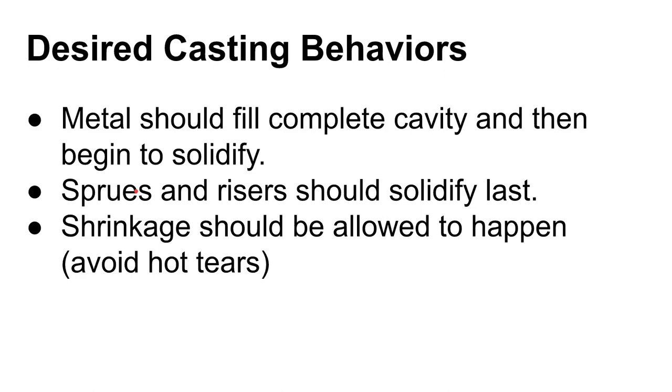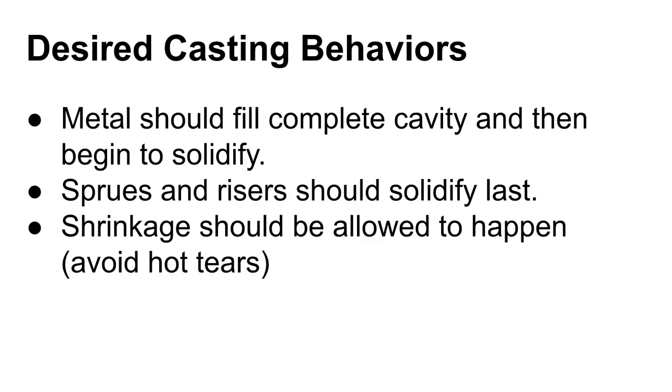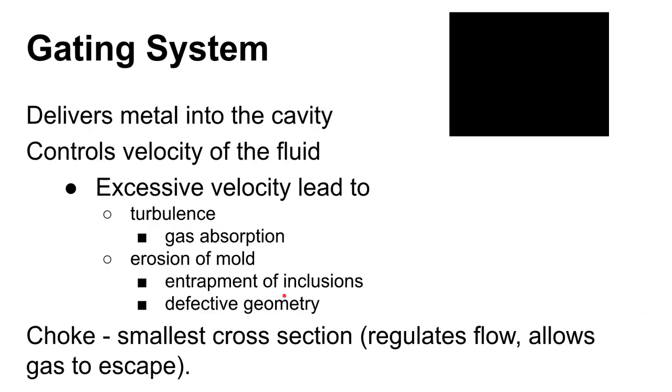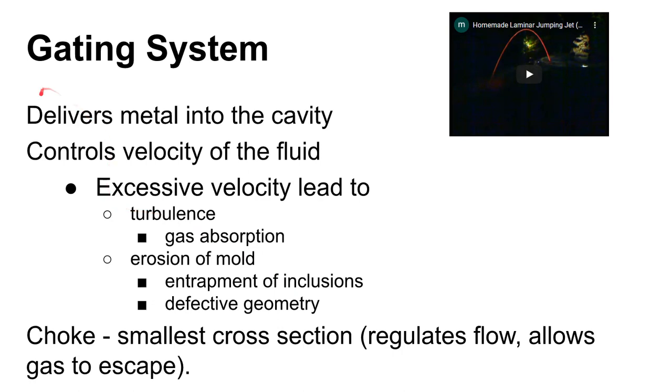Understand that shrinkage is going to happen and design your mold around it. One thing that can happen is if you have a dumbbell-shaped casting — as it solidifies it's going to want to draw together, and if it's not allowed to, you can get things called hot tears that occur when the metal is restrained and prevented from drawing in. There are ways to avoid that by feeding in additional metal as solidification happens.